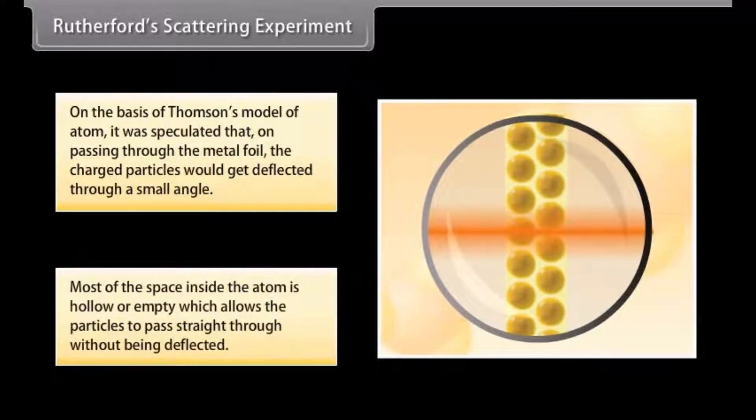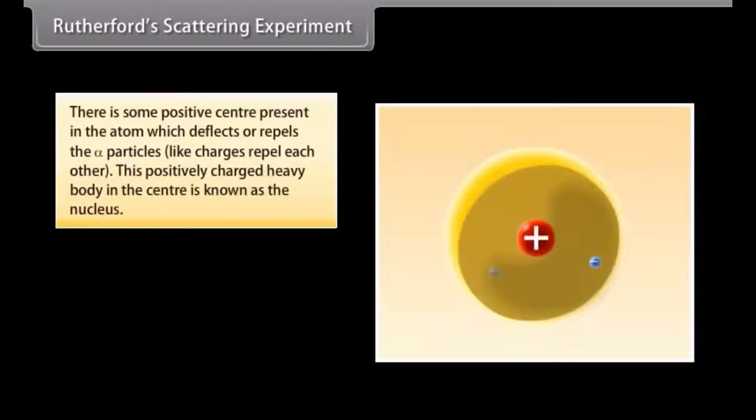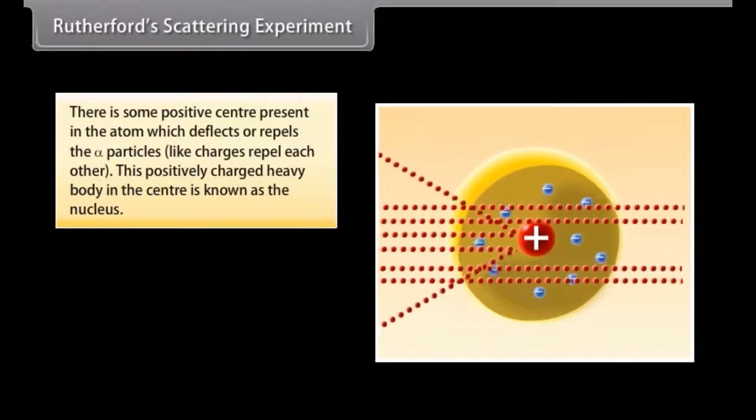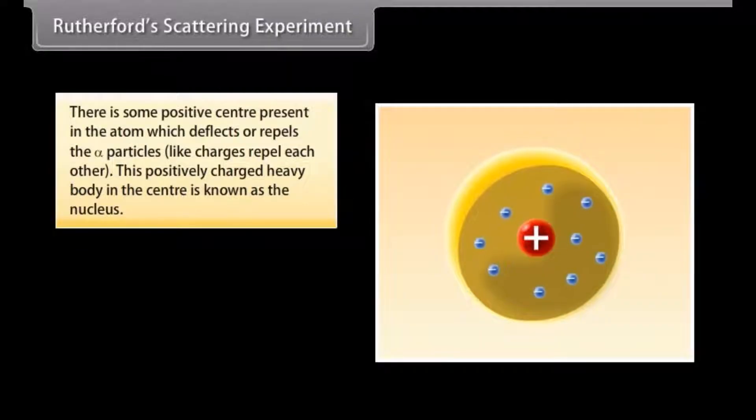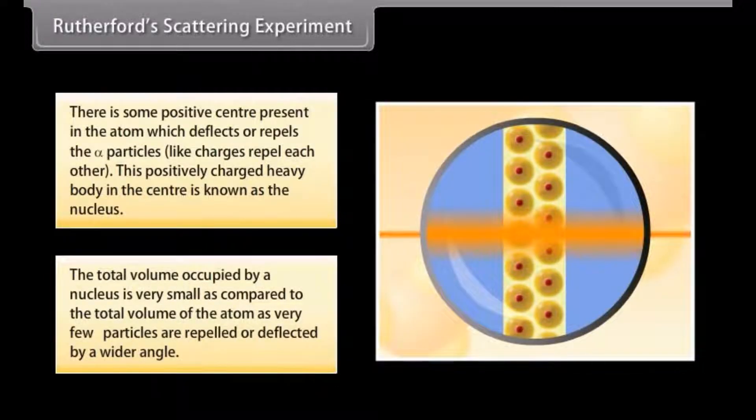Most of the space inside the atom is hollow or empty, which allows the particles to pass straight through without being deflected. There is some positive center present in the atom, which deflects or repels the particles, like charges repel each other. This positively charged heavy body in the center is known as the nucleus. The total volume occupied by a nucleus is very small as compared to the total volume of the atom, as very few particles are repelled or deflected by a wider angle.